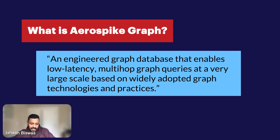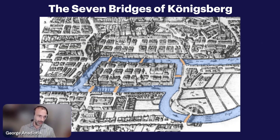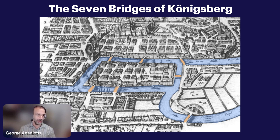Let's talk about what graph databases are and why should anyone care about them. Why and how should developers and architects think about this? Graph science, or network science, can actually be pinpointed at a precise point in time where there's pretty much universal consensus that it started.